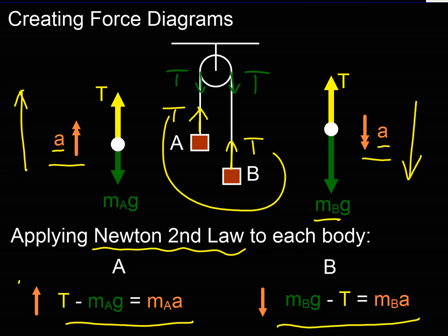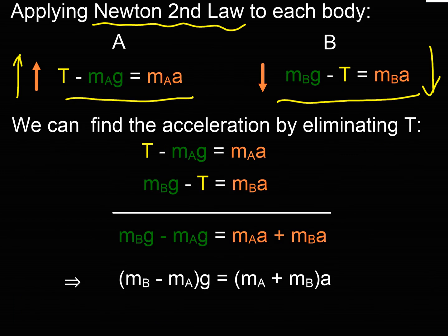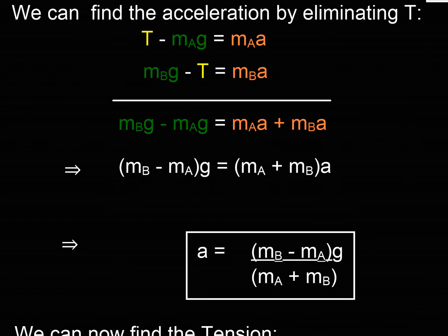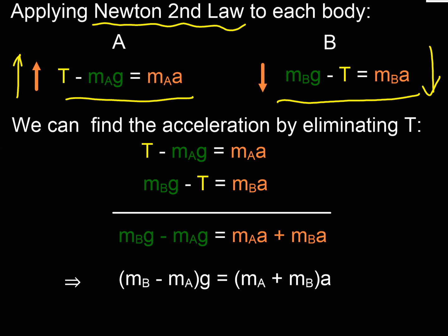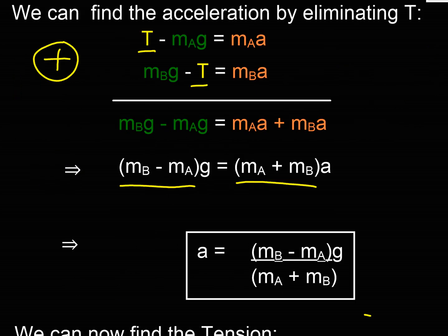Applying F = ma upwards for body A and F = ma downwards for body B gives two equations. Treating these as simultaneous, the positive T in the first equation and negative T in the second cancel when added, eliminating T. Factorising and rearranging both sides gives the acceleration: a = (m_B − m_A) / (m_A + m_B) × g. The acceleration is primarily driven by gravity, multiplied by g.